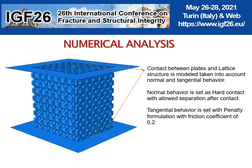Regarding the contact between the upper plate and lattice structure, as well as the lower plate and lattice structure, normal and tangential behavior are defined. In the normal direction, hard contact is applied with allowable separation after contact. In the tangential direction, penalty formulation is applied with a friction coefficient of 0.2.